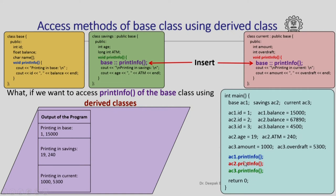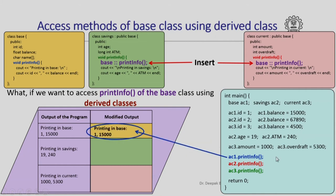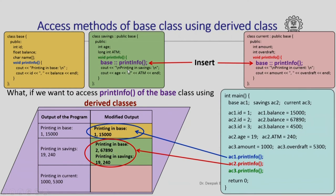Let us see what would get printed when these three statements are executed. The first one will still print the same thing as before. In the second case, it will first invoke print_info of the base class, printing 'printing in base' and the values of ID and balance of AC2, which are 2 and 67890, and then also print 'printing in savings' and the values of age and ATM of AC2, which are 19 and 240. Similarly, when I invoke AC3.print_info, it will first invoke print_info of the base class, printing 'printing in base' and the values of ID and balance of AC3, which are 3 and 4500, and then additionally print 'printing in current' and the values of amount and overdraft, which are 1000 and 5300.